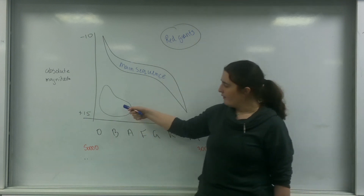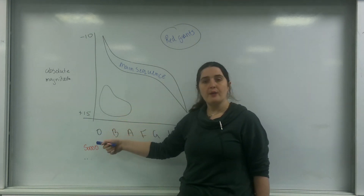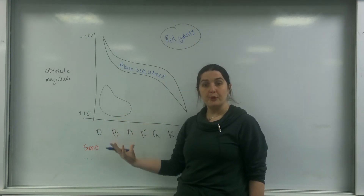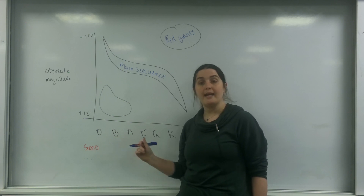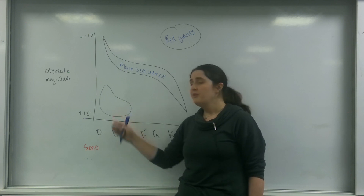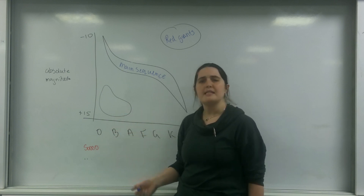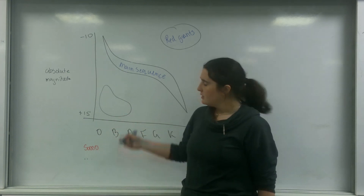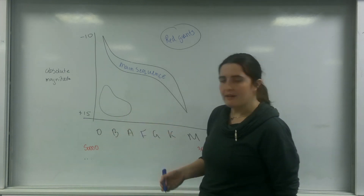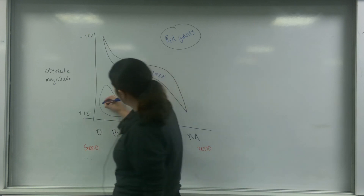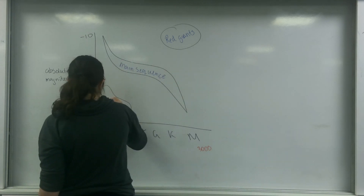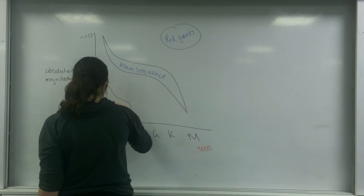These stars got the name red giants. Down in another region there are objects in the O category — the blue or white category — but they are very, very dim. Those objects became known as white dwarfs.